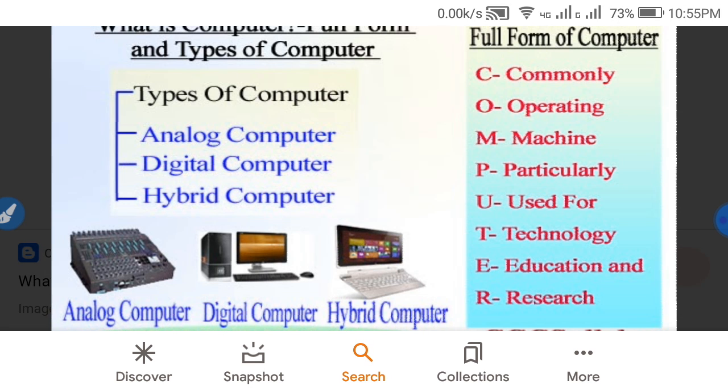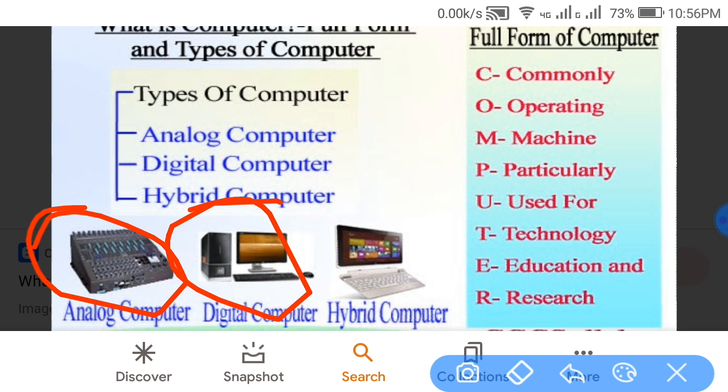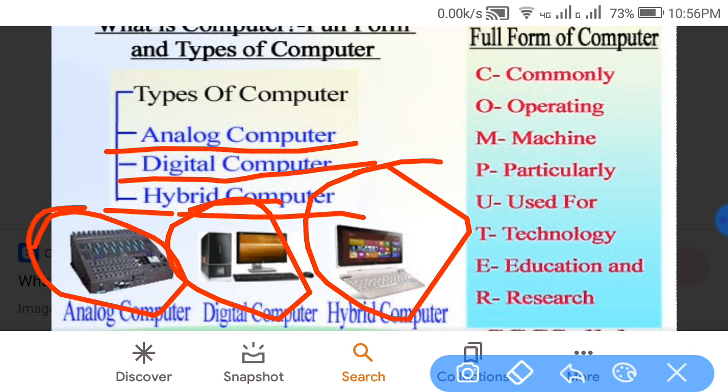Number one: analog computer. Number two: digital computer. Number three: hybrid computer. Here are some pictures shown by me - analog computer, digital computer, and hybrid computer. Types of computer - mainly three types of computer.